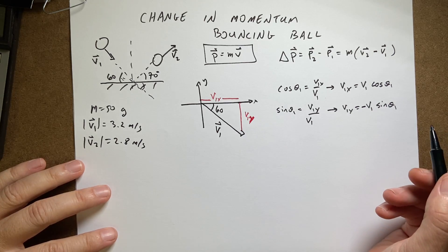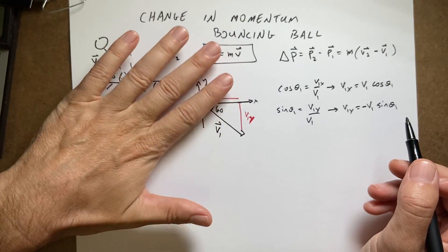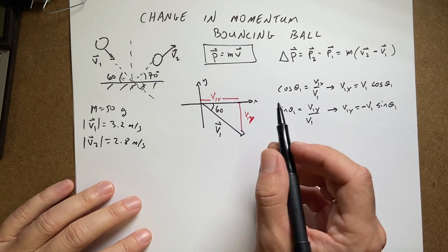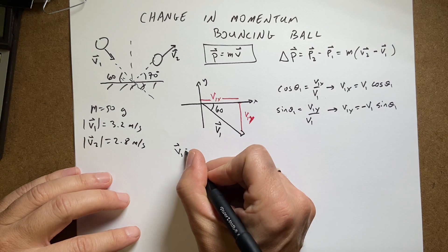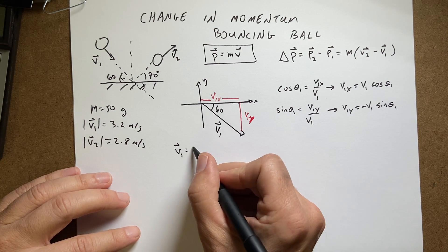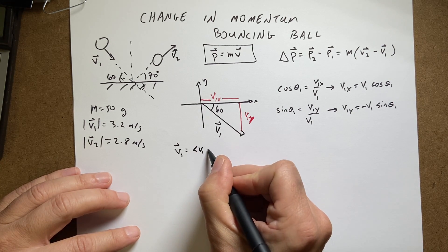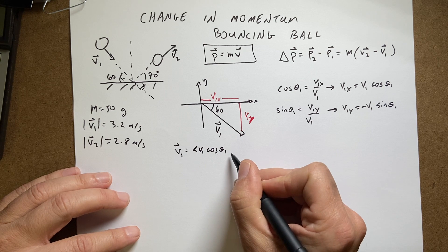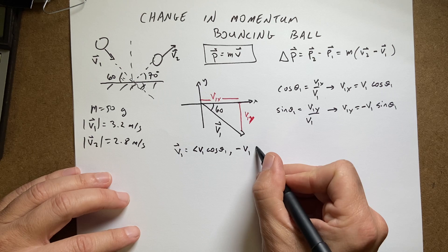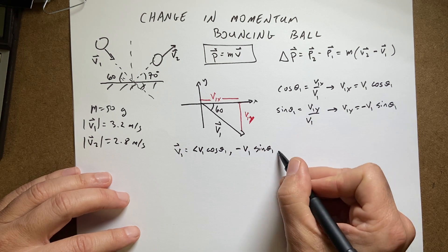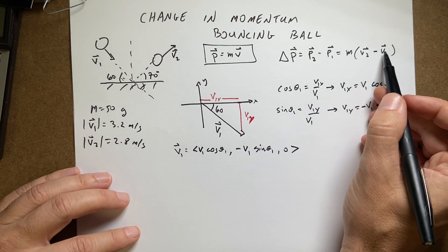So now, and what about the z direction? The z direction would be in and out. In and out of the paper. So it's not moving that way. It says zero. So now I can write v1 vector equals the x component v1 cosine theta1 comma minus v1 sine theta1 zero. And that's going to go up here.